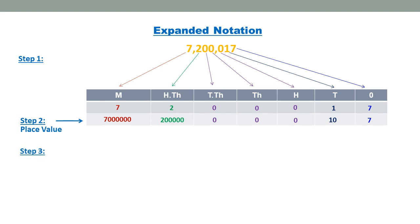Step 3: Write 7,200,017 as the sum of place values of its digits. That is 7,200,017 equals 7 million plus 200,000 plus 0 plus 10 plus 7.